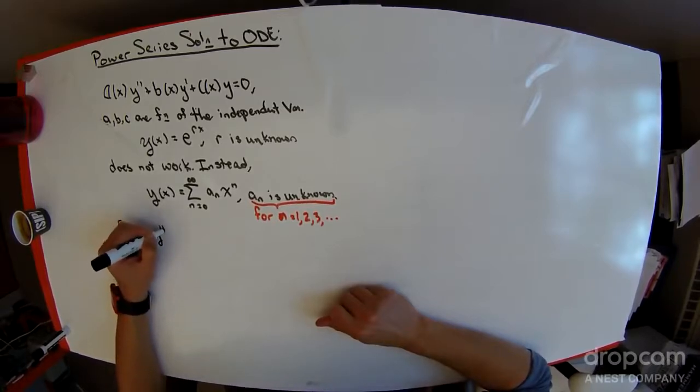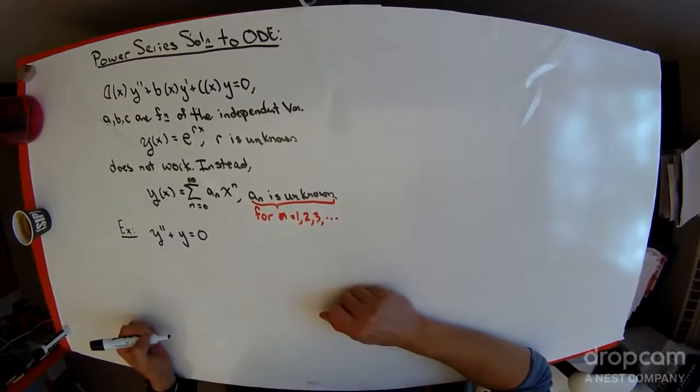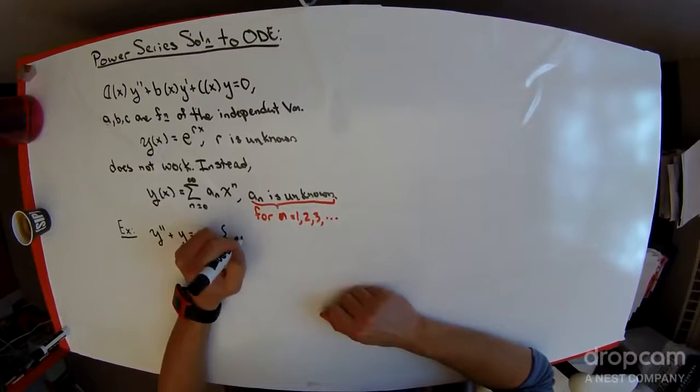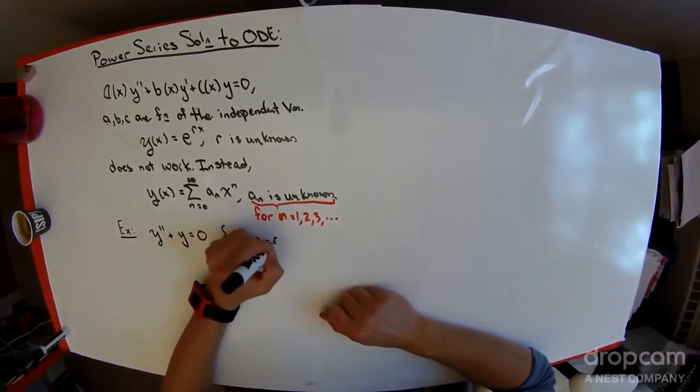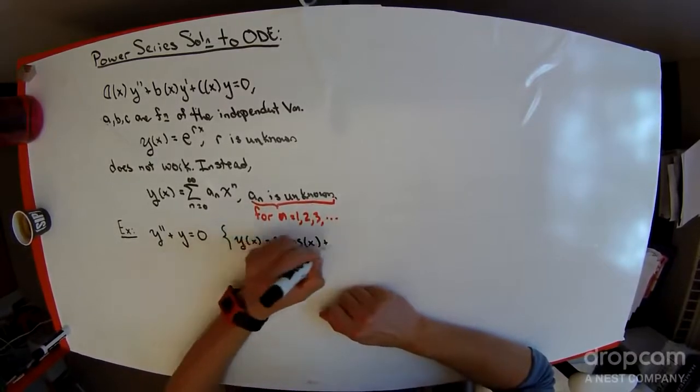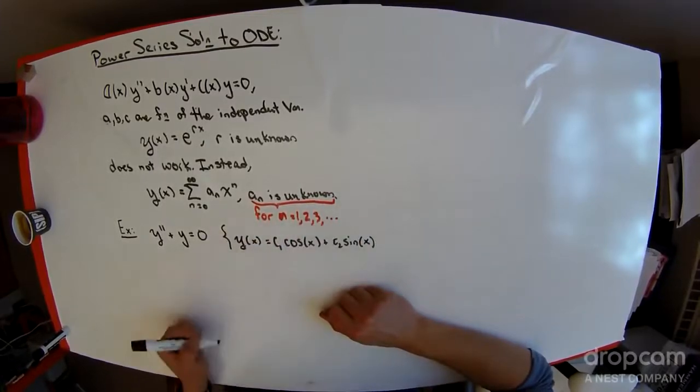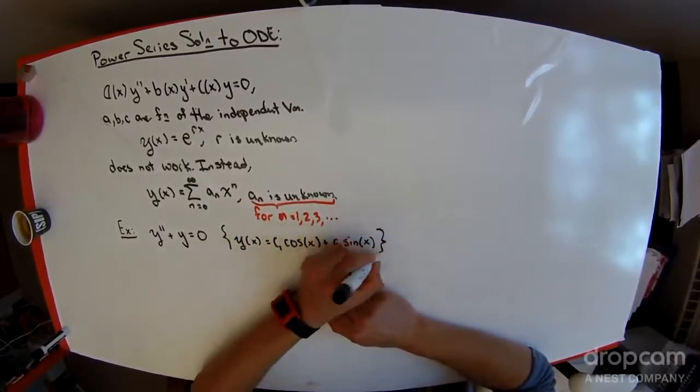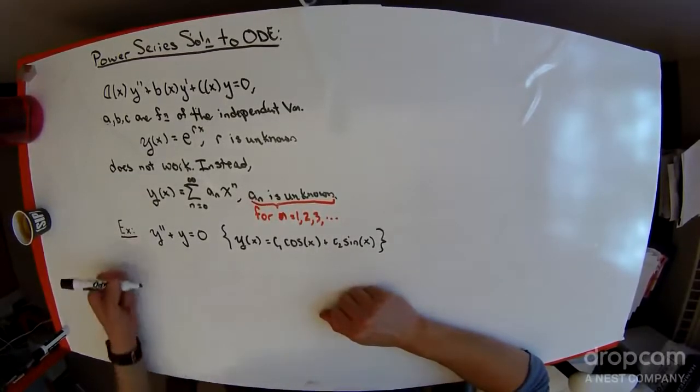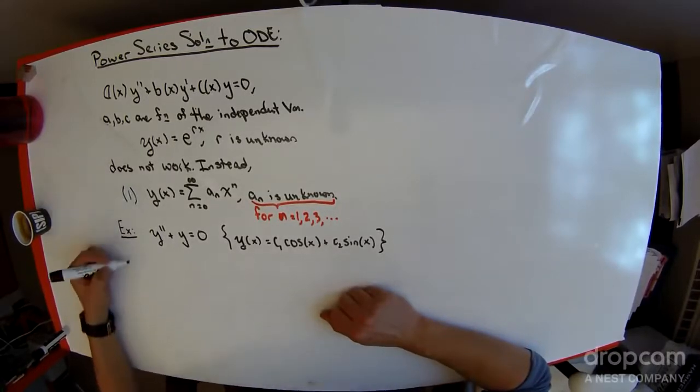With this example, we're just going to revisit the classic oscillator problem of y double prime plus y is equal to 0. We know, just based on personal experience, that the solution to this problem is c1 cos x plus c2 sin x. We should keep that in mind as we search for the solution through this more complicated method. So we'll call this equation 1, that's our guess.